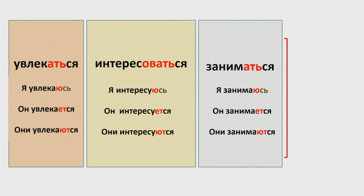Конечно, эти глаголы первой группы. Поэтому мы говорим: «я увлекаюсь», «он увлекается», «они увлекаются». А «интересоваться» — потому что все глаголы, в конце которых «-овать», «-овать» становится «-у»: «я интересуюсь», «он интересуется», «они интересуются». А «заниматься» — как и «увлекаться»: «я занимаюсь», «он занимается», «они занимаются».